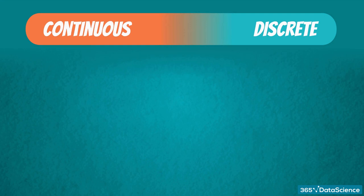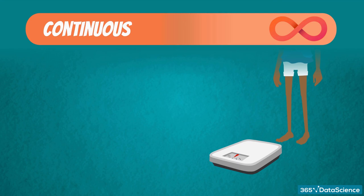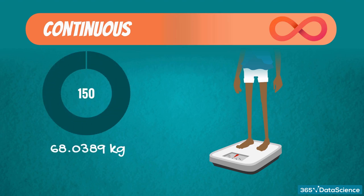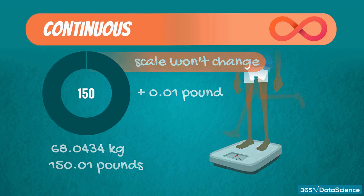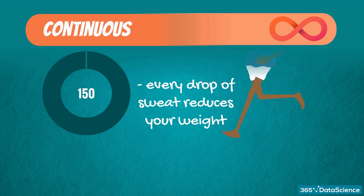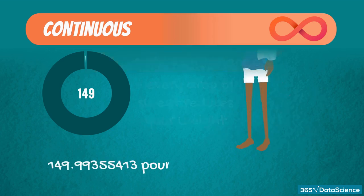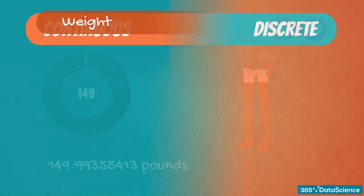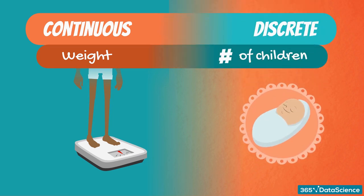Continuous data is infinite and impossible to count. For instance, your weight can take on every value in some range. You get on the scale and the screen shows 150 pounds or 68.0389 kilograms, but this is just an approximation. If you gain 0.01 pound, the figure on the scale is unlikely to change. Your exact weight is a continuous variable — it can take on an infinite amount of values no matter how many digits there are after the decimal point. Your weight can vary by incomprehensibly small amounts and is continuous, while the number of children you want to have is directly understandable and is discrete.